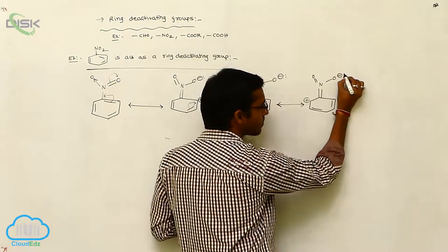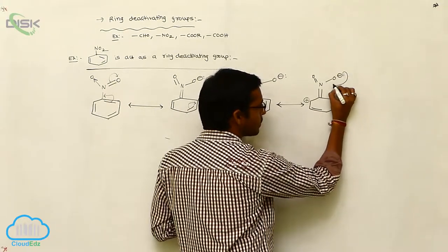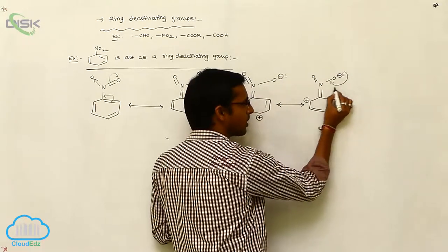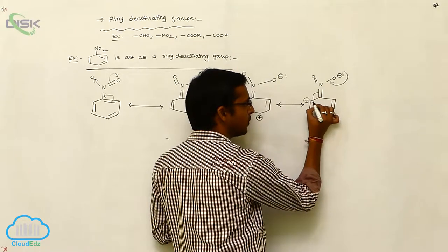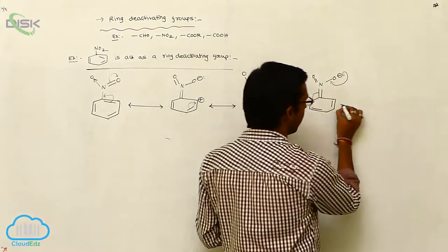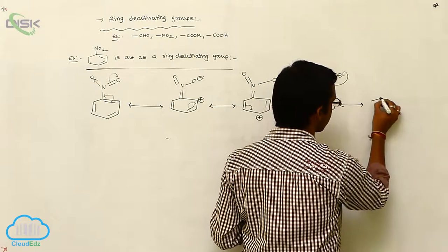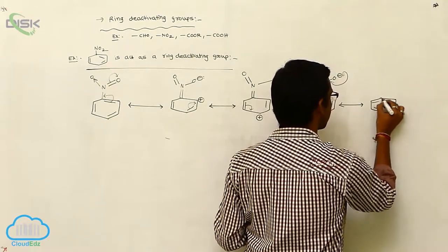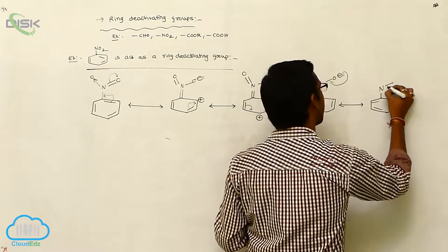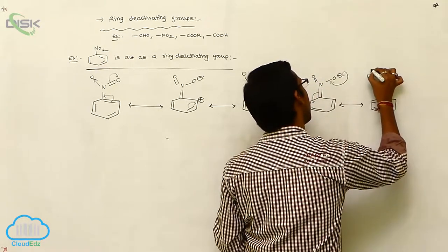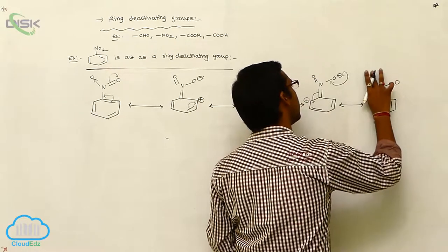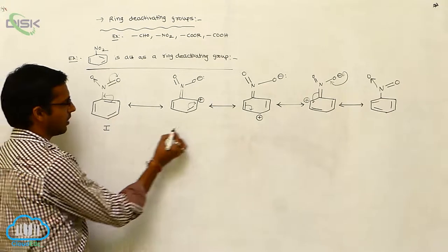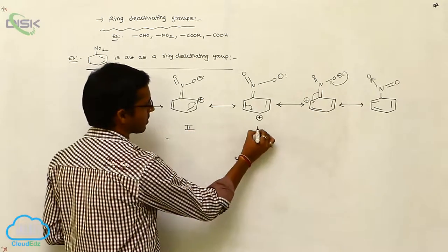Next, this pi bond is shifted to here. Whenever the excess amount of electrons shift, this pi bond is shifted to the inner side. It gives the first structure. Here, double bond O and O minus. So the coordinated complex is found. This is structure 1, structure 2, structure 3, structure 4, structure 5.